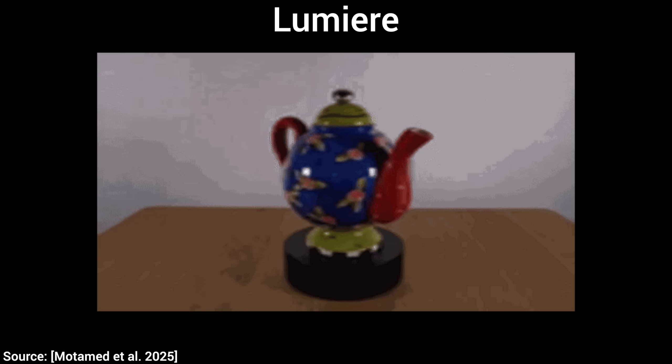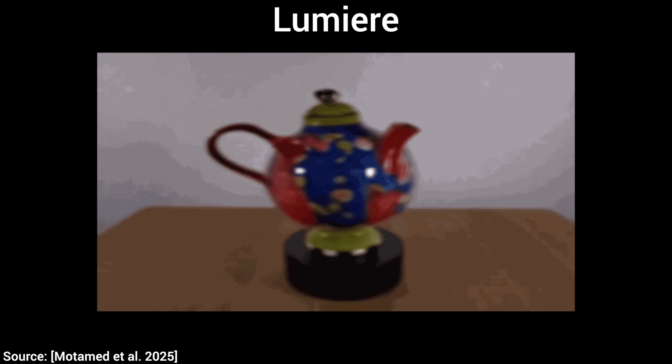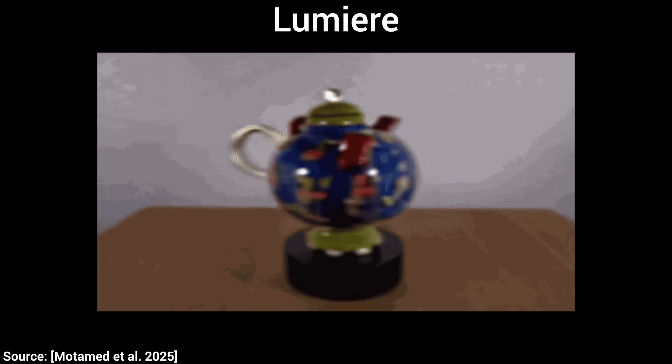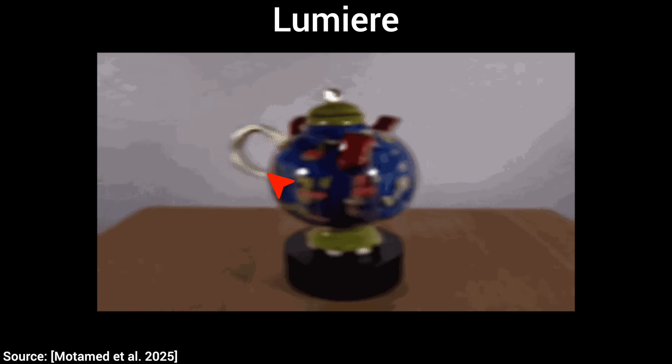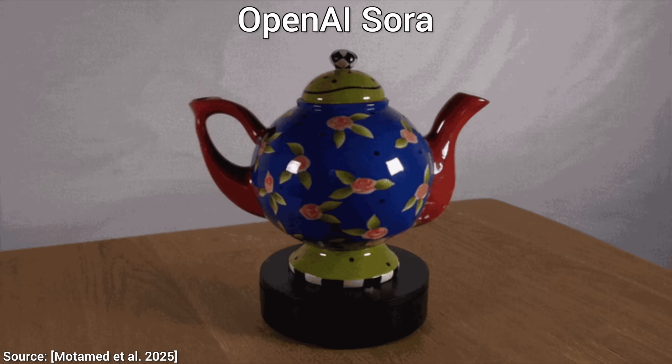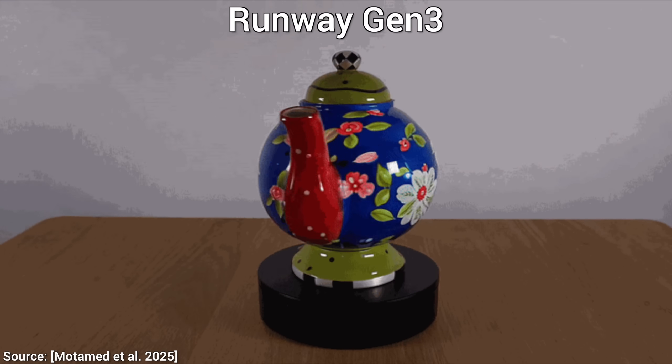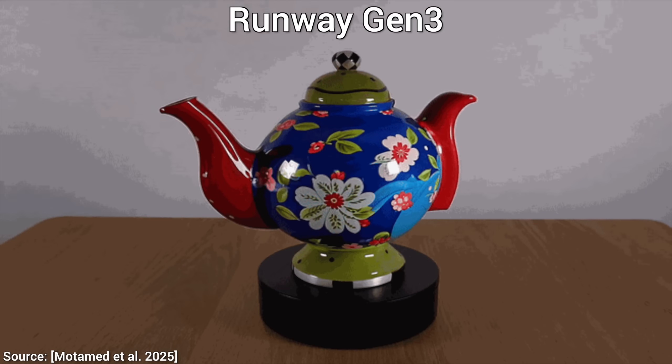Now then, Lumiere says no no no, this is a rotating teapot and I shall do exactly that. Wait, where were the handles exactly? Object permanence is not my strong point. But OpenAI's Sora and Runway's Gen 3 kind of gets it. Not perfect, but not bad.